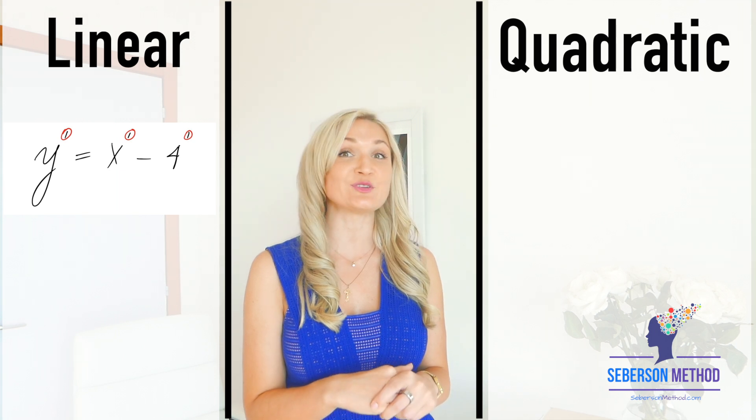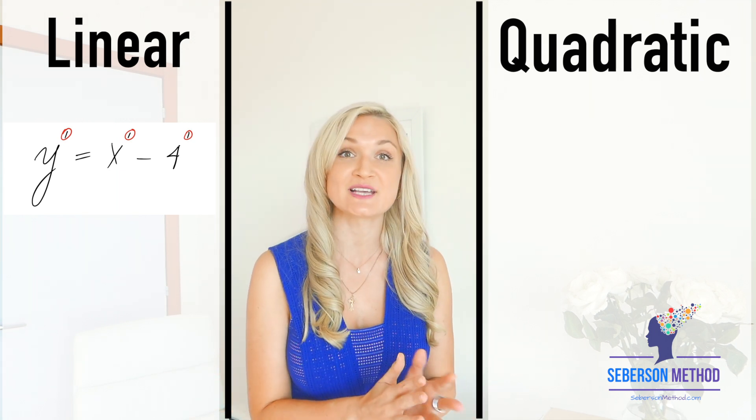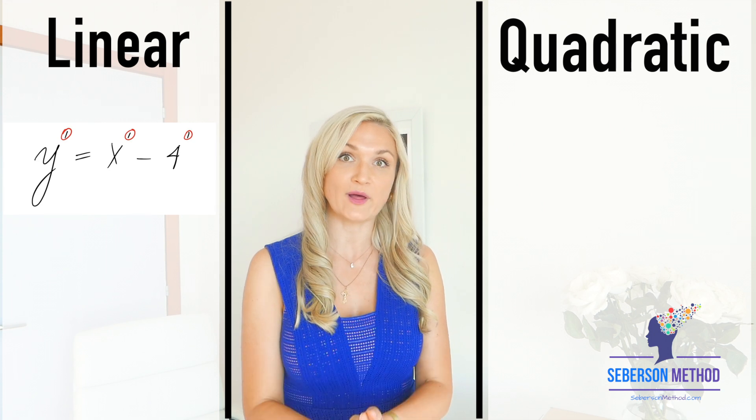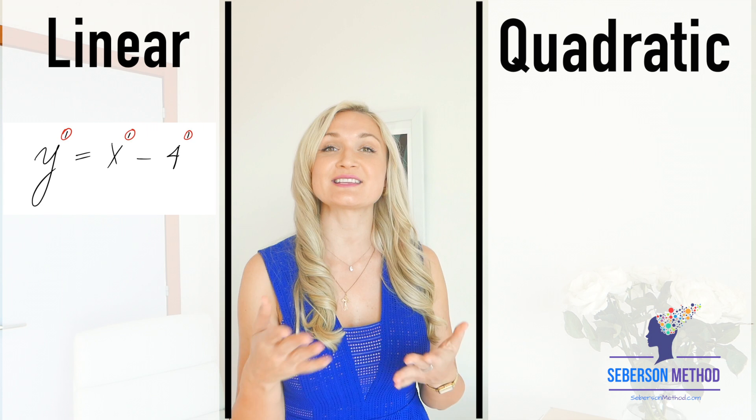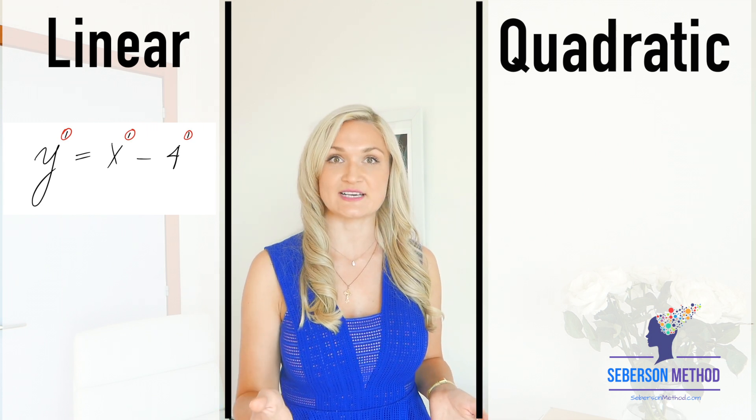So there are going to be no squares, no cubes. The greatest exponent is going to be one. The classical equation of a line is y equals x plus b. But it's not necessarily going to look like that on your test.